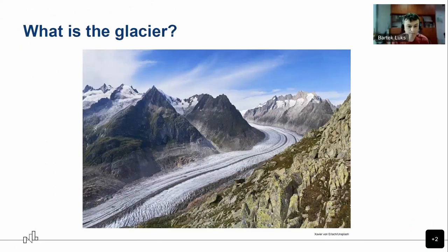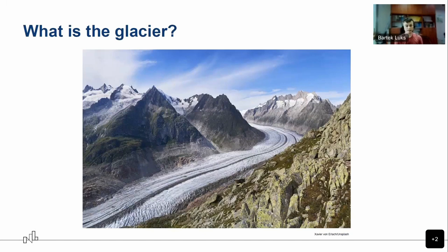What is a glacier? Basically, glaciers are rivers of ice — that's how we glaciologists, and not only us, feel glaciers are. They can look like rivers of ice, as in alpine glaciers, or they can be big ice caps or even ice sheets. But they have to move — they have to be a moving thing.